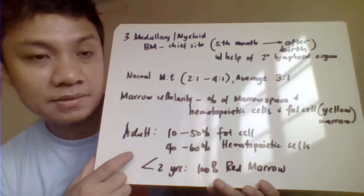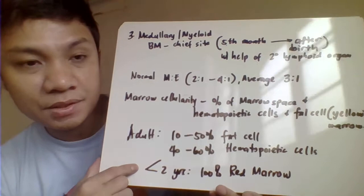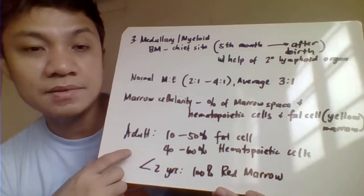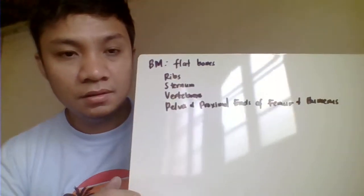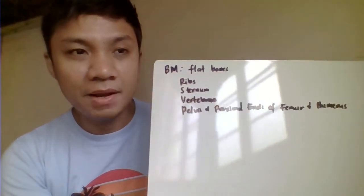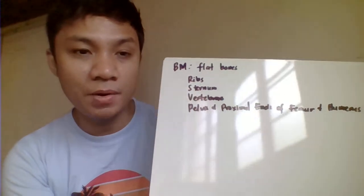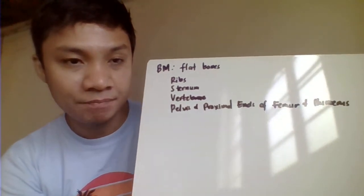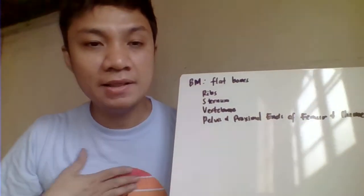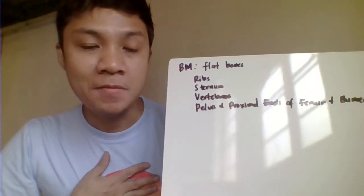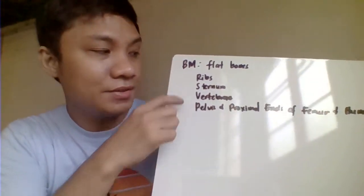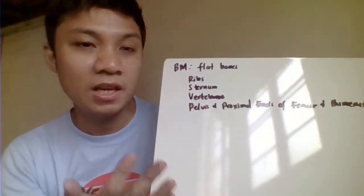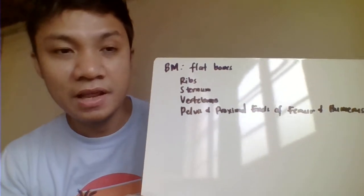In children less than two years old, the majority of bone marrow is red bone marrow, where blood cell production takes place. Blood cell production occurs in the bone marrow found within all flat bones of the body, including the sternum, sacral crest, ribs, vertebral column, tibia, and ulna.